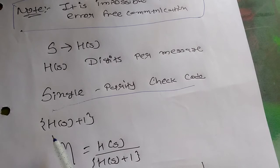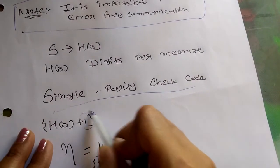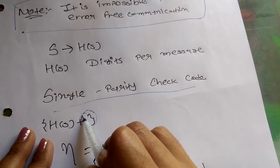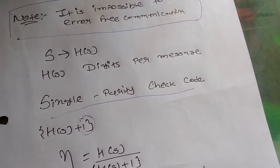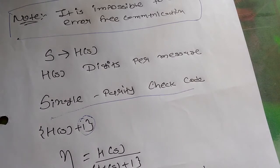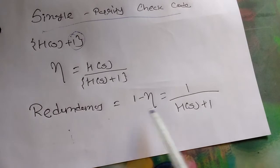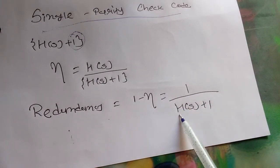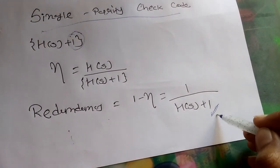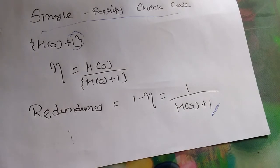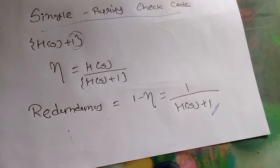What is the single parity check scheme? Here plus one is an extra binary digit. In this encoding scheme, an extra binary digit is added to each code word to ensure that the number of ones in the resulting code word are either even or odd. This is the redundant bit. Redundancy equals 1 minus eta, which equals 1 over H(S) plus 1. The plus 1 is the check bit, or extra digit.